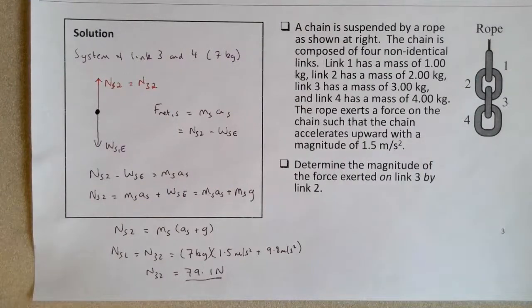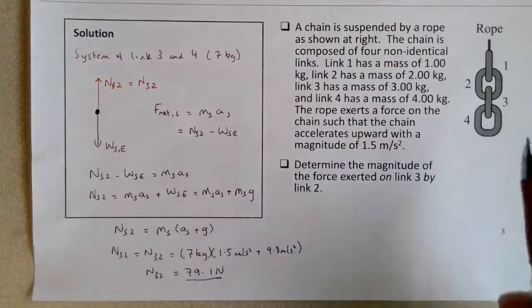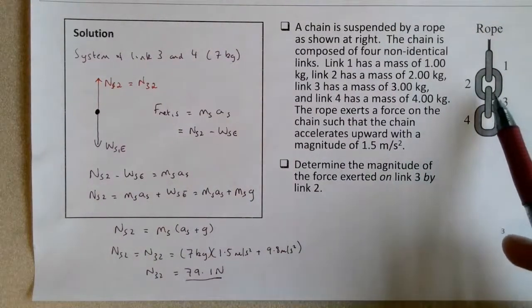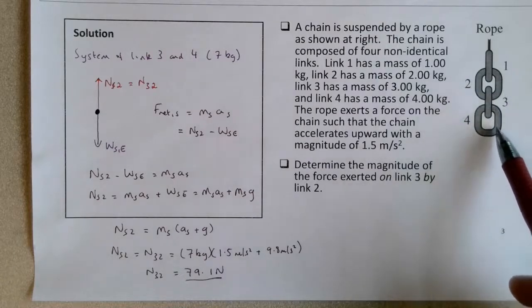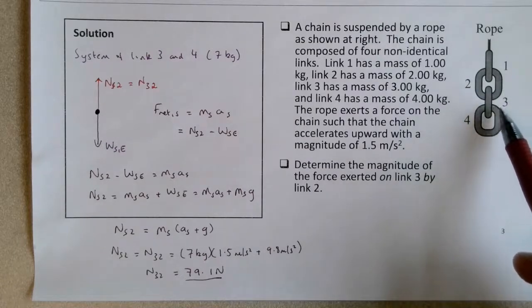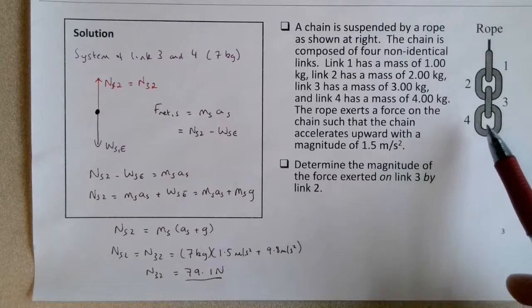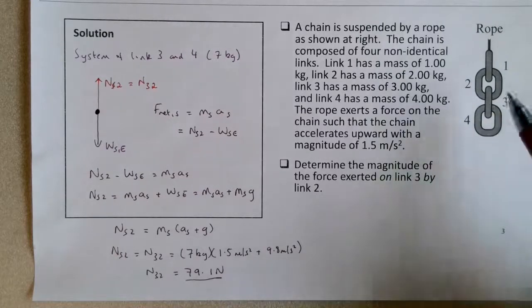So as I mentioned, this is definitely the recommended method: to use the concept of systems to make the question a little easier to solve for, instead of looking at the three individual forces on link 3, which would be the normal by link 2, the normal downward by link 4, plus the weight of link 3.